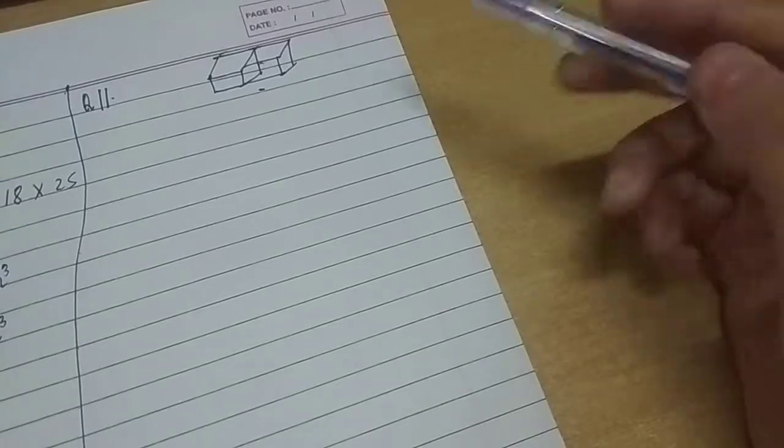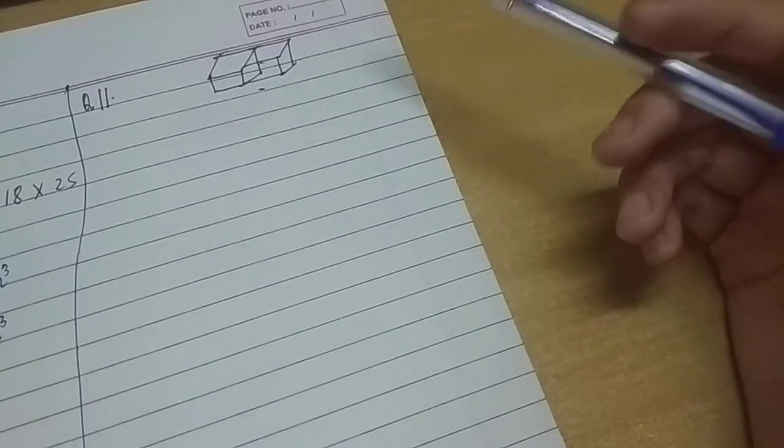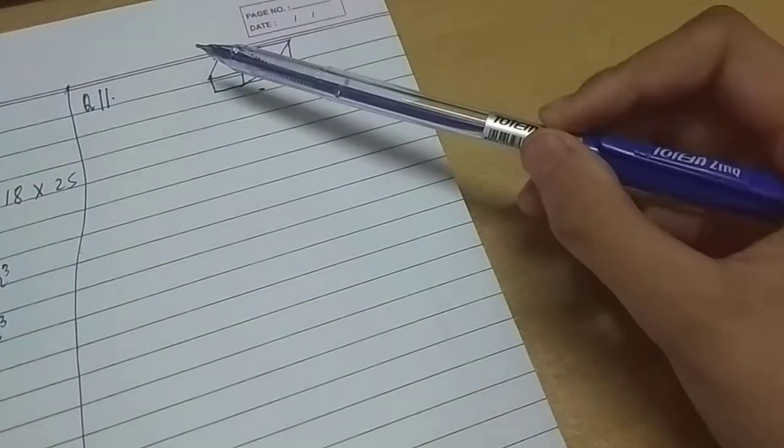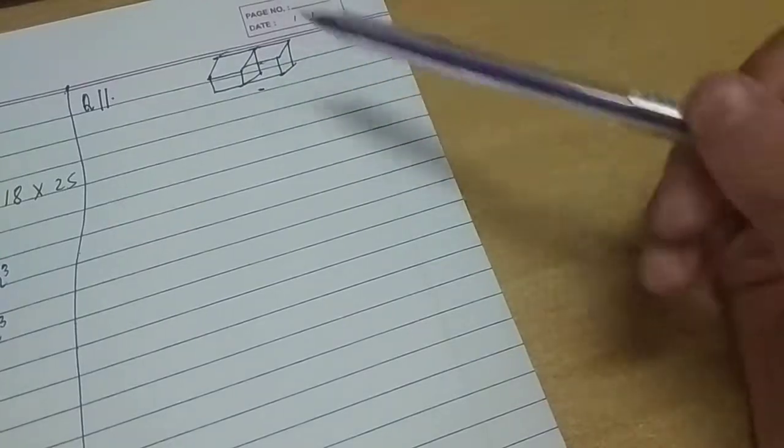Hey everyone, let's solve question number 11. It says that two cubes each of volume 512 cm³ are joined end to end. Find the surface area of the resulting cuboid.